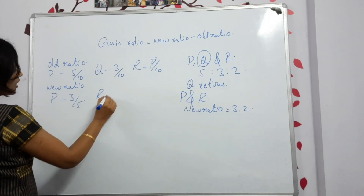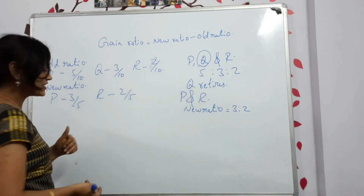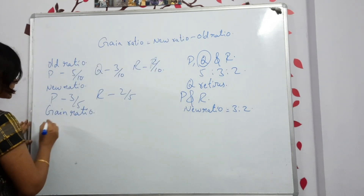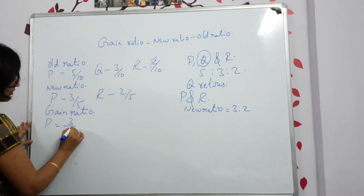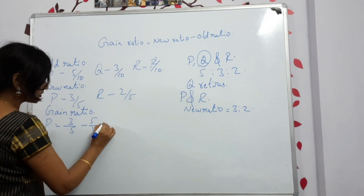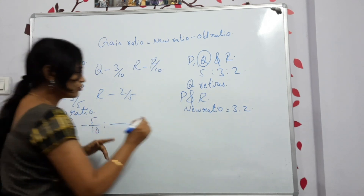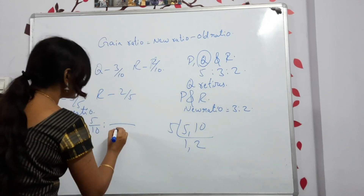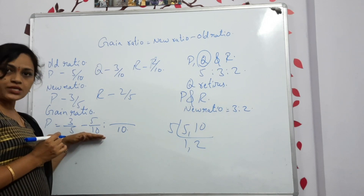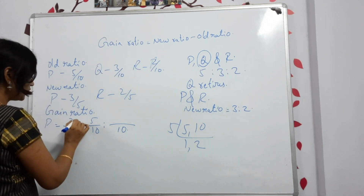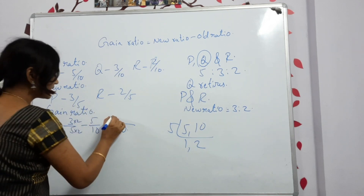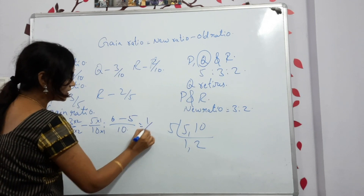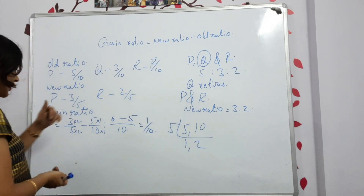Now let's find the gain ratio using the formula: new ratio minus old ratio. For P: 3/5 minus 5/10. The LCM of 5 and 10 is 10. Multiply 3/5 by 2/2 to get 6/10. So 6/10 minus 5/10 = 1/10. That is P's gain ratio.